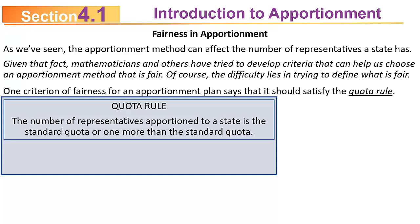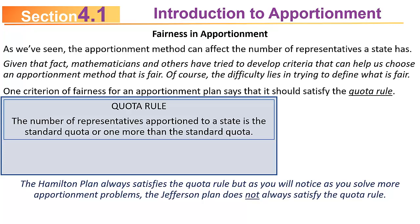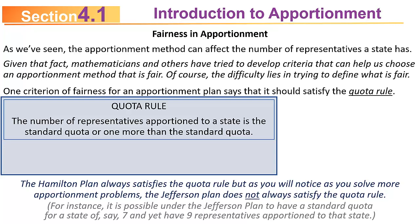The Hamilton plan always satisfies the quota rule by design — you either leave the rounded-down value or add at most one seat to a state. The Jefferson plan, however, does not always satisfy it. For example, under the Jefferson plan a state with a standard quota of seven could potentially end up with nine representatives — something that could never happen under the Hamilton plan. So under the quota rule, the Hamilton plan would be considered fairer.